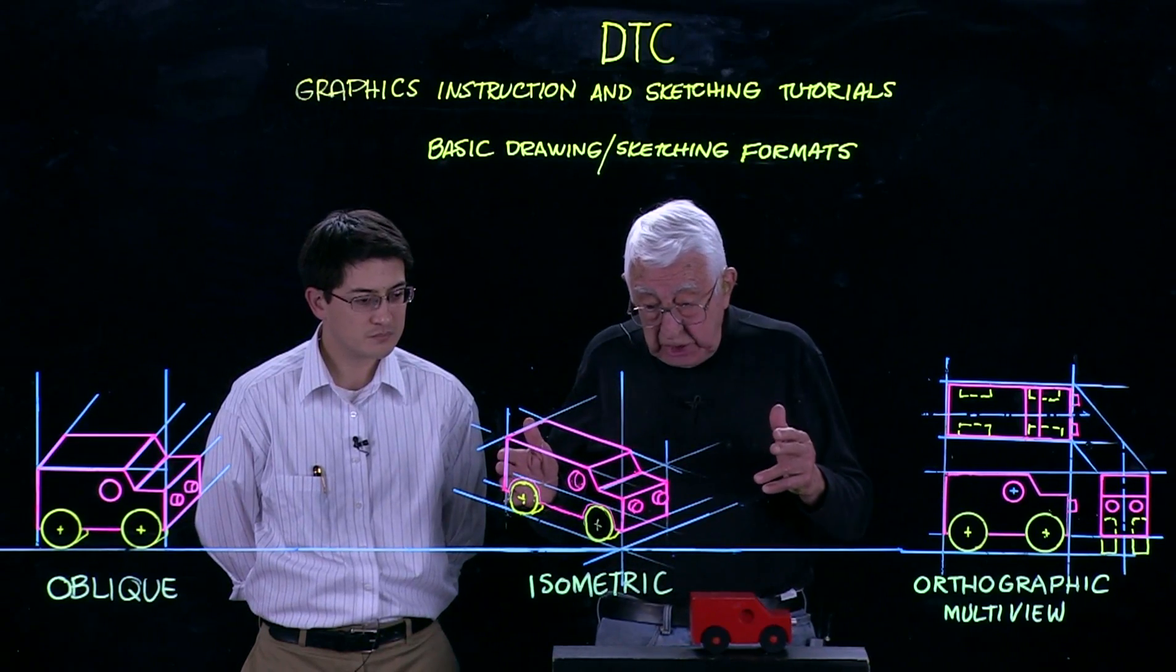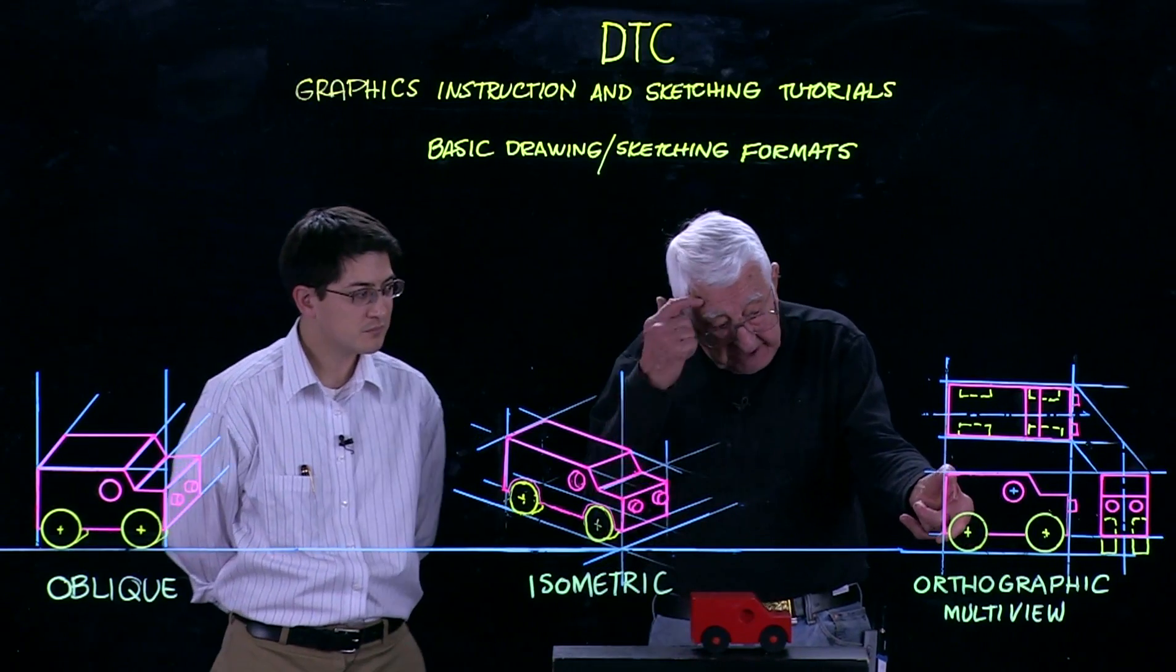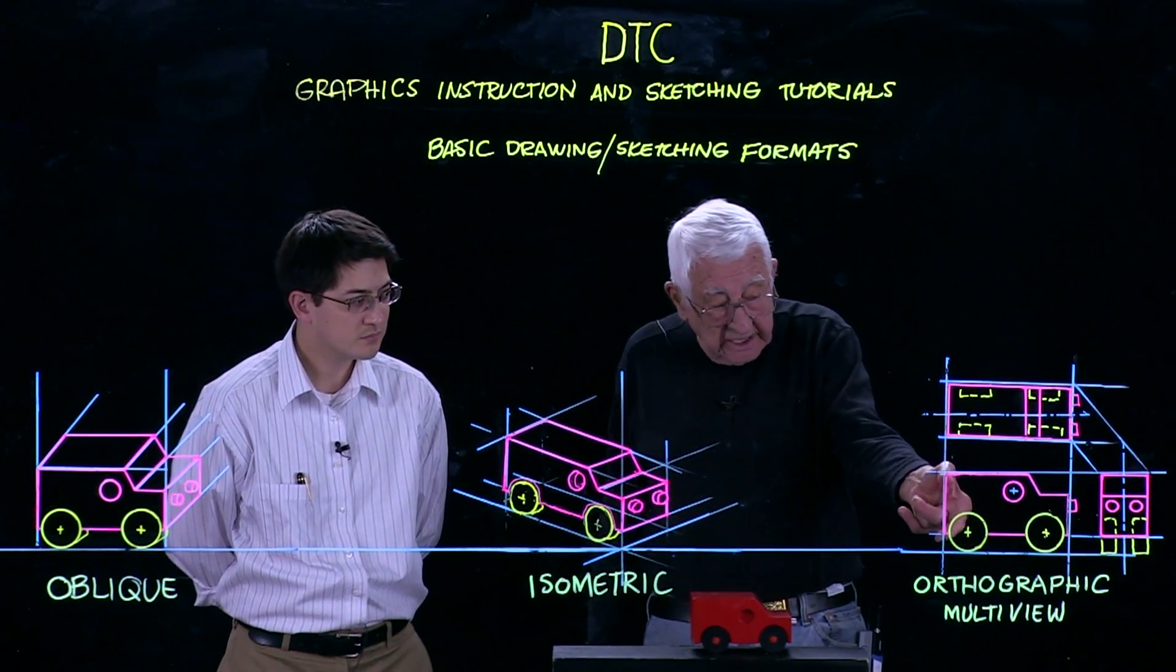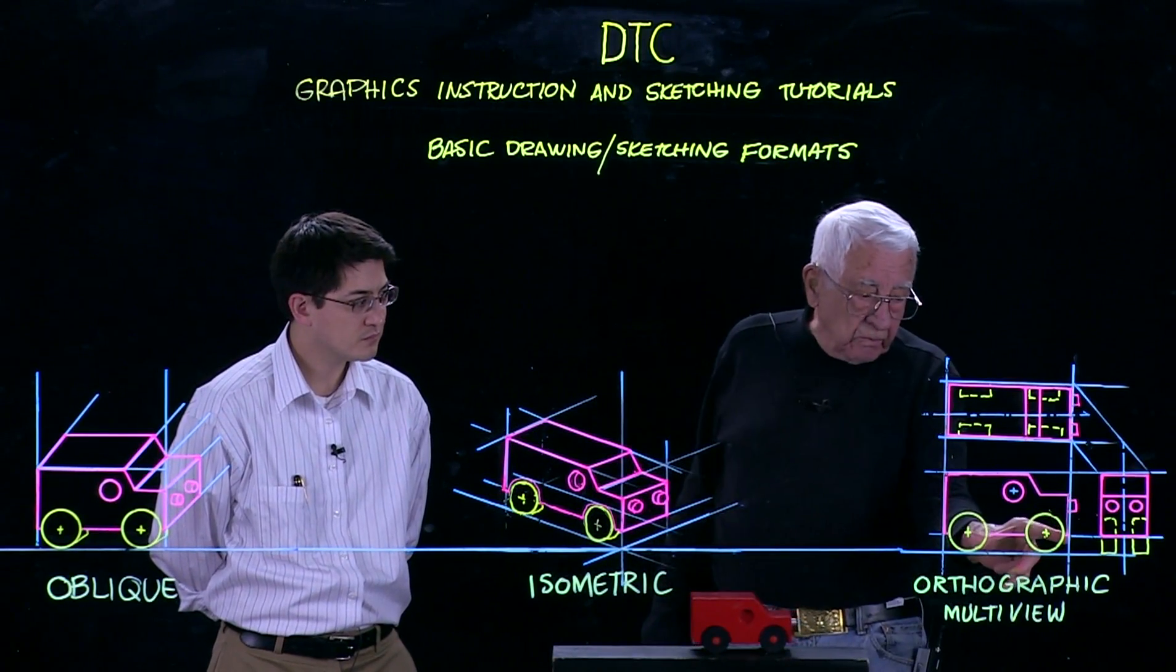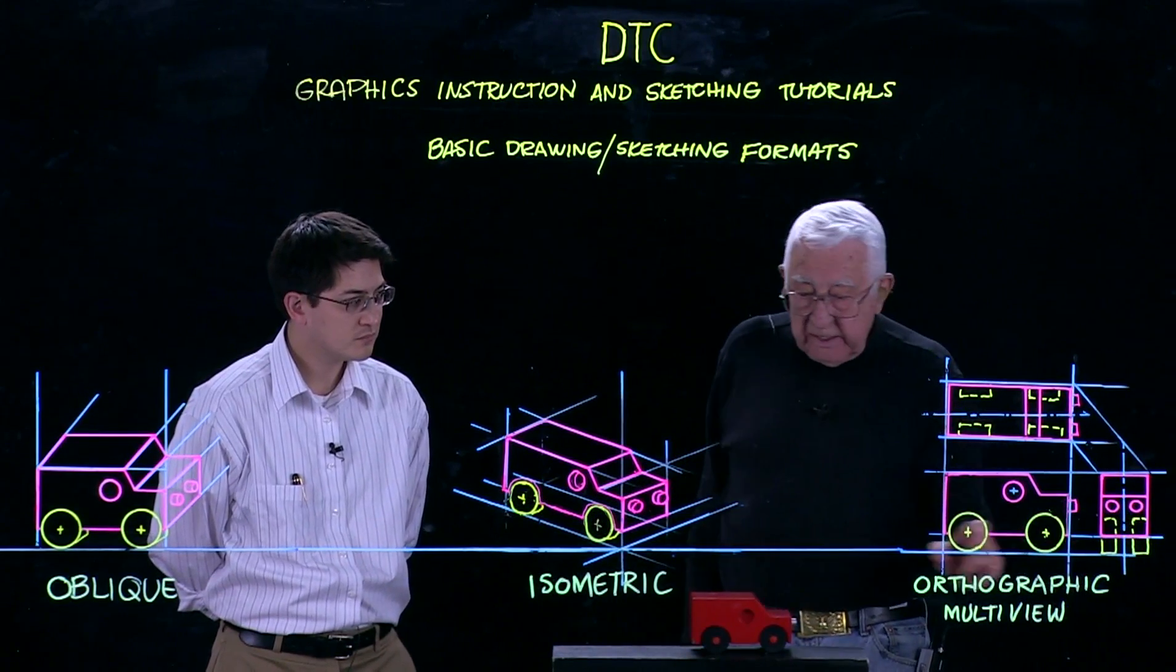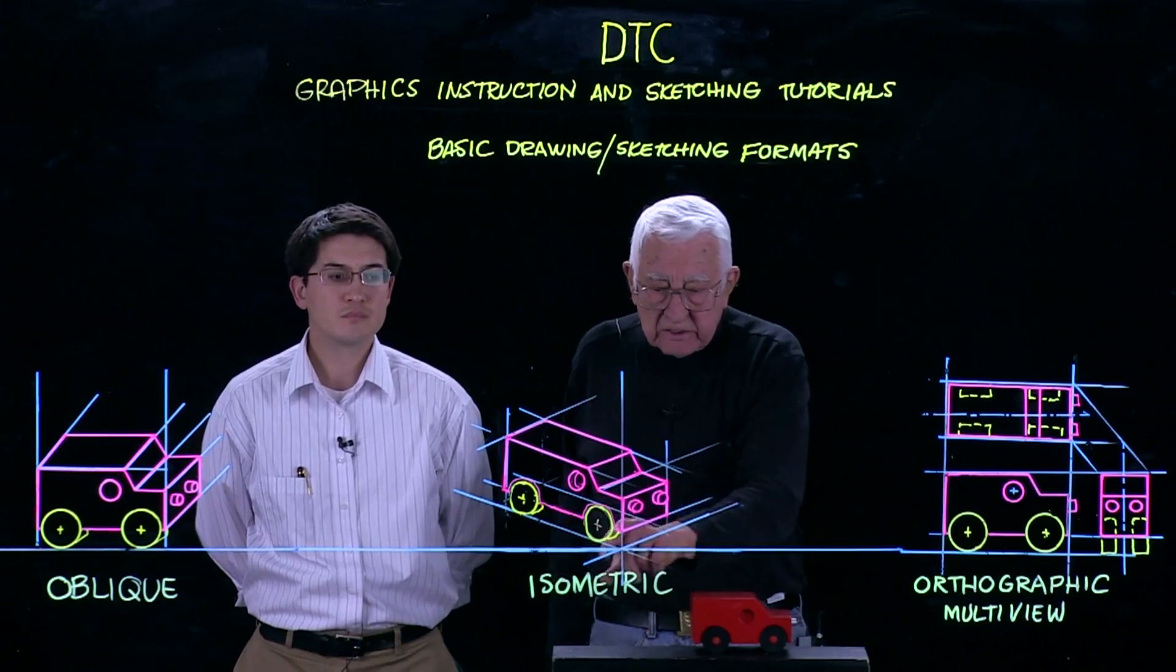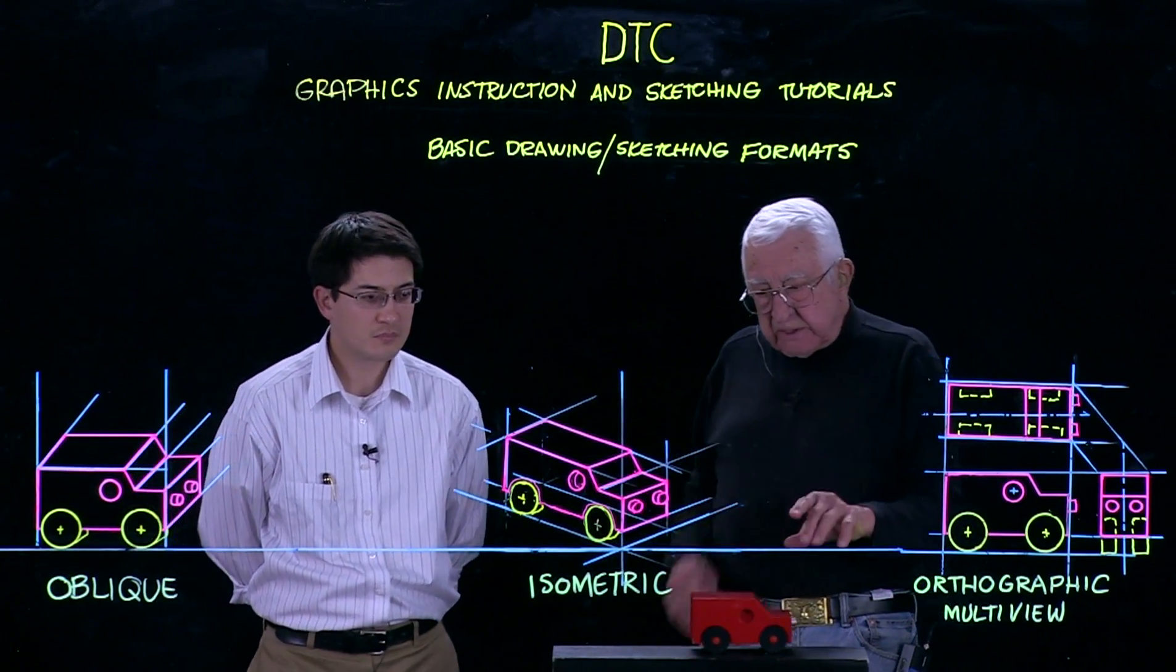It says that if I have a height on a multi-view or my idea is that it is this high I can put it over here. If it's this long I can put that over here, how wide I can measure it here. Equal measure three axes x, y and z.